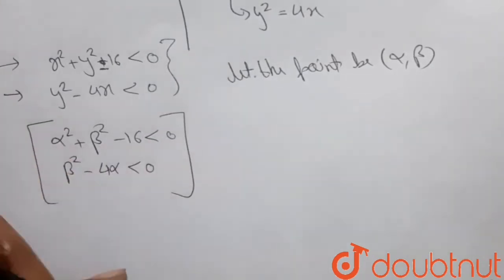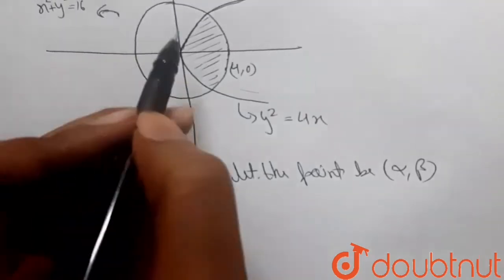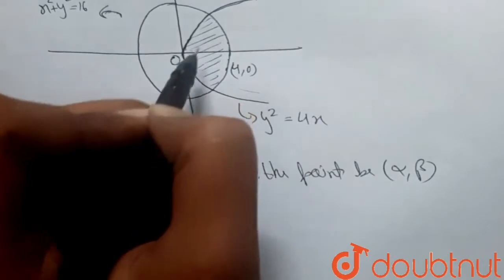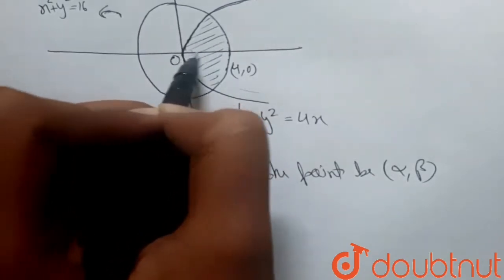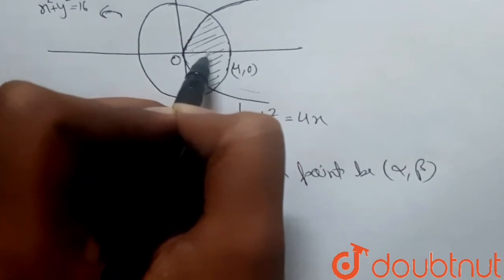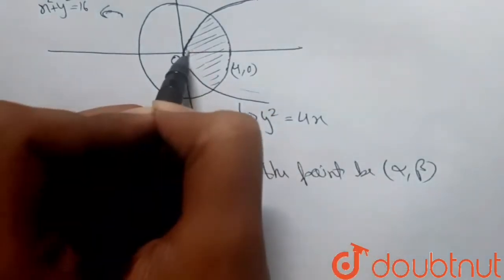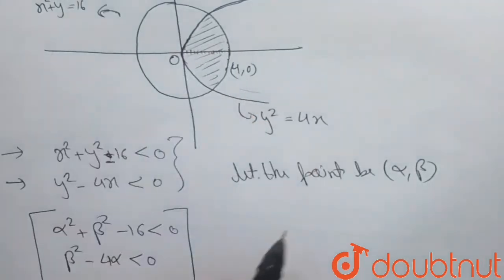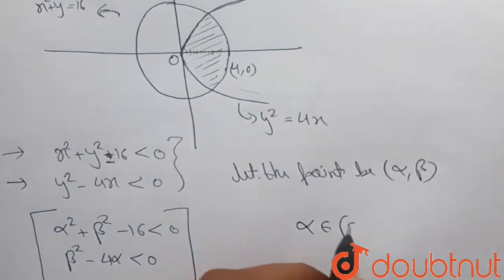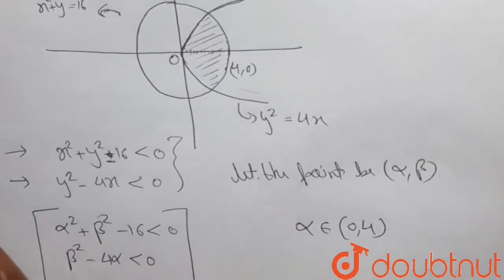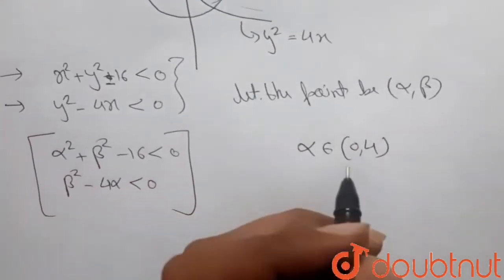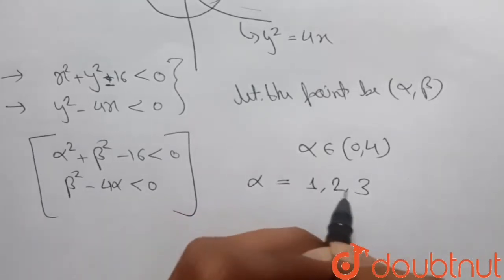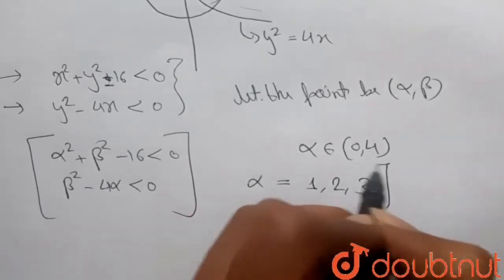From the diagram, we can see that if α lies on the x-axis inside the shaded part, then it must be greater than 0 and less than 4. So α belongs to the range (0, 4). The integral points in between 0 and 4 are 1, 2, and 3 only. So α can be either 1, 2, or 3.